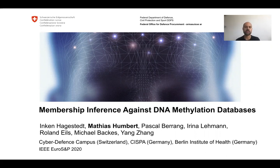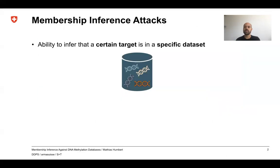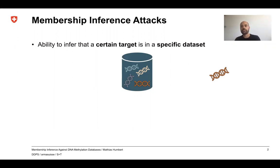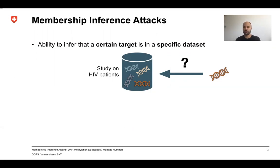Today I'm going to talk about membership inference attacks against DNA methylation databases. We have two main things in this title: membership inference attacks and DNA methylation. Membership inference attacks is the ability to infer that a certain target is in a specific database. Imagine you have a specific profile about the target — for instance a genomic profile — and you want to know whether this profile is part of a dataset. This can become privacy-sensitive if the dataset contains only data about HIV patients, because then if you know the victim is part of the dataset, you will also infer that he or she carries HIV.